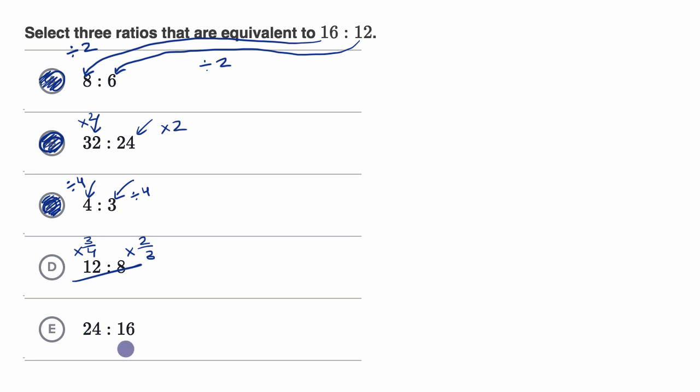And then 24 to 16, to go from 16 to 24, you would multiply by, let's see, that's one and a half. So this right over here would be, you'd multiply by one and a half. And to go from 12 to 16, you would multiply, that is, by one and one-third. So times one and one-third, so you're not multiplying by the same amount. So once again, not an equivalent ratio.